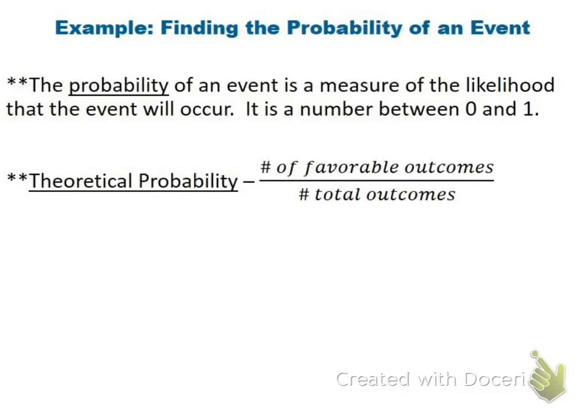Today we're reviewing probability. Remember, probability is number of favorable outcomes over total outcomes — what we want to happen over the total number of outcomes.